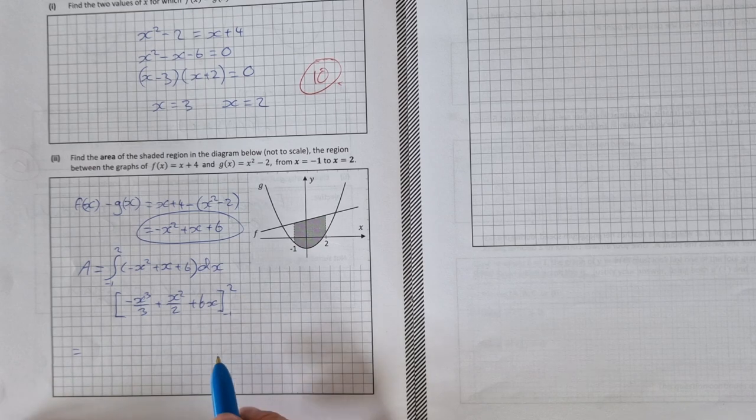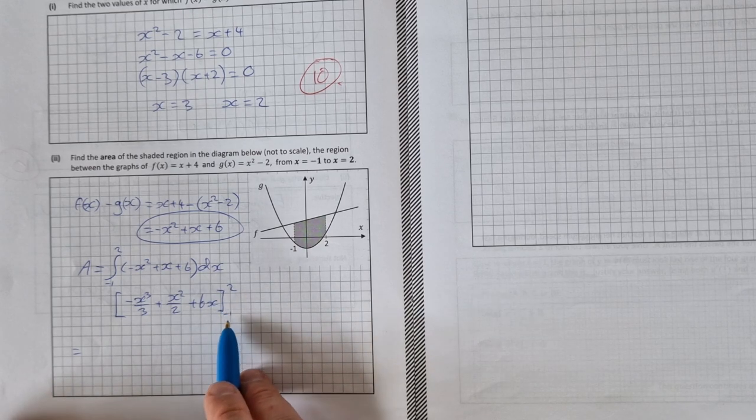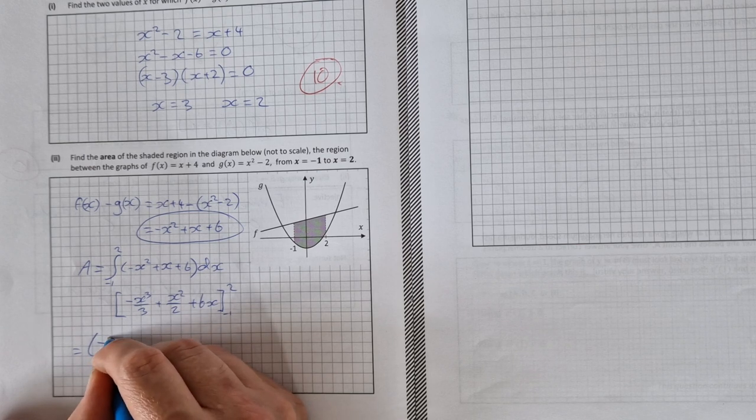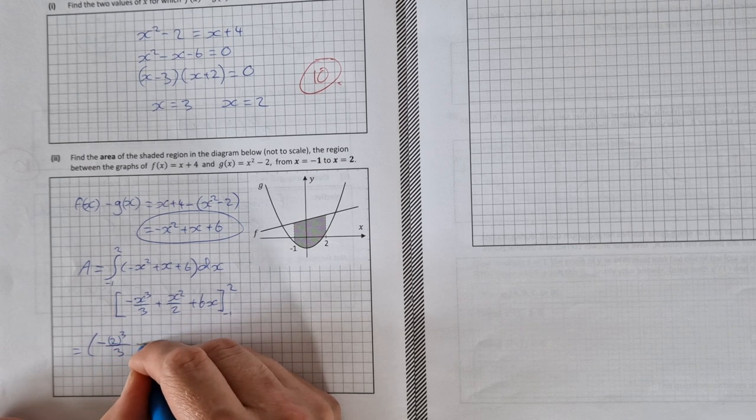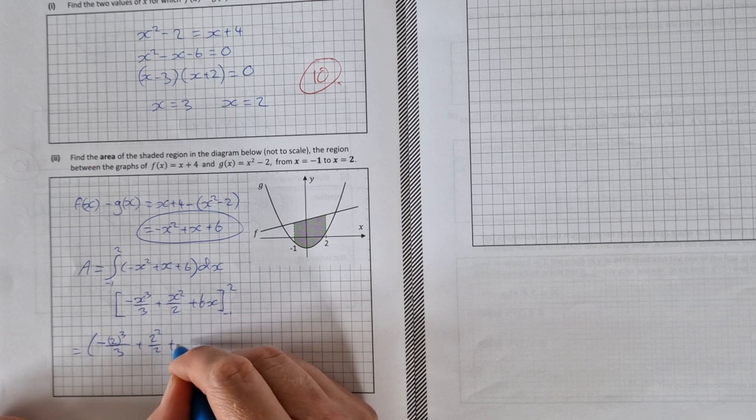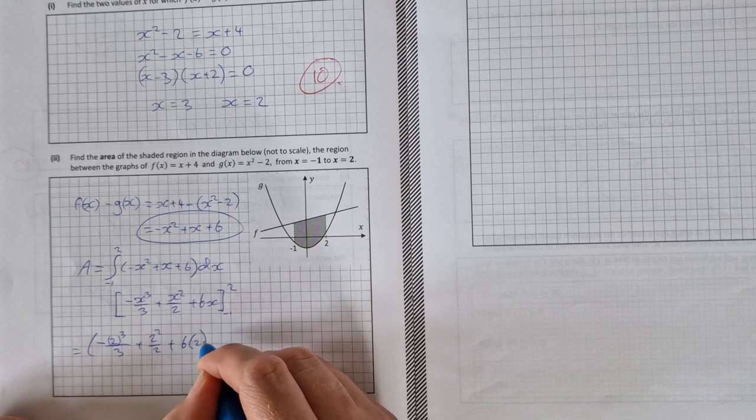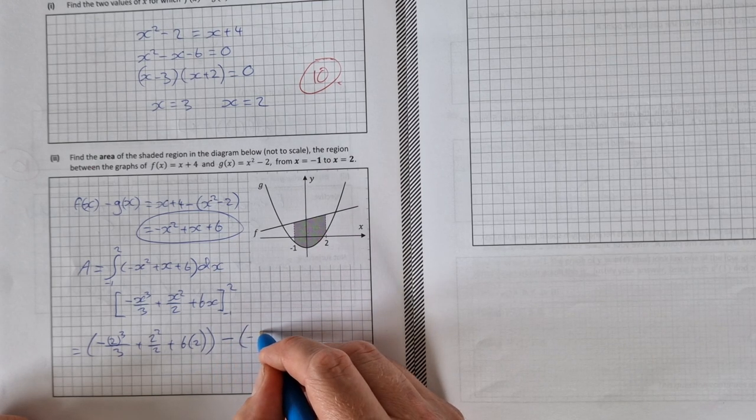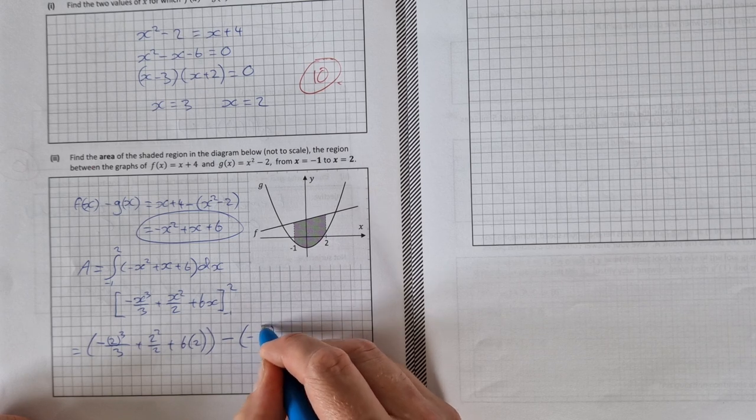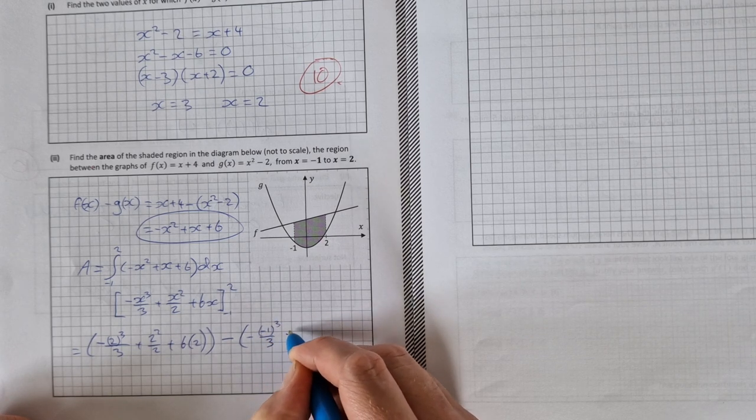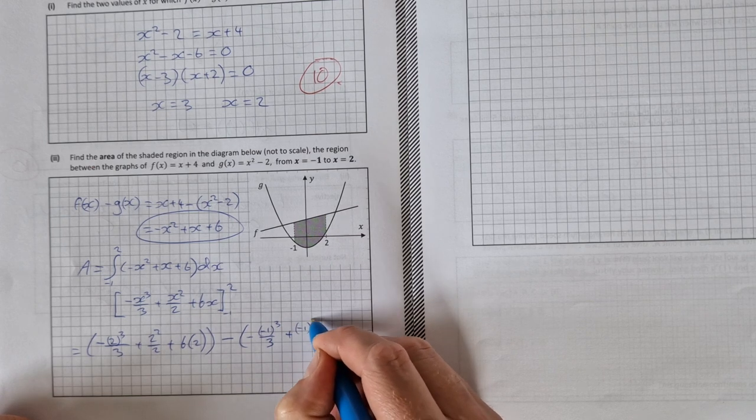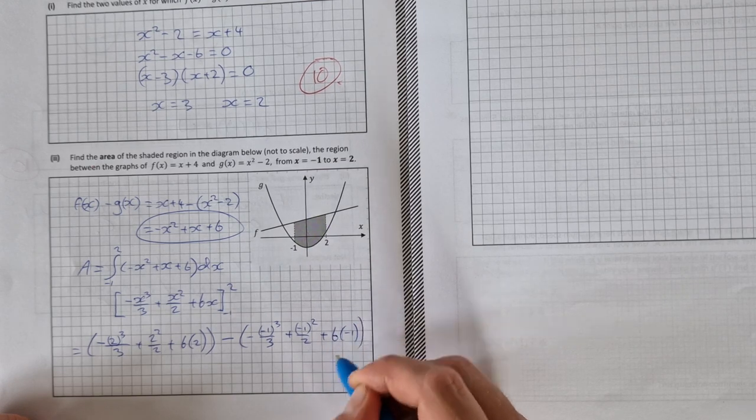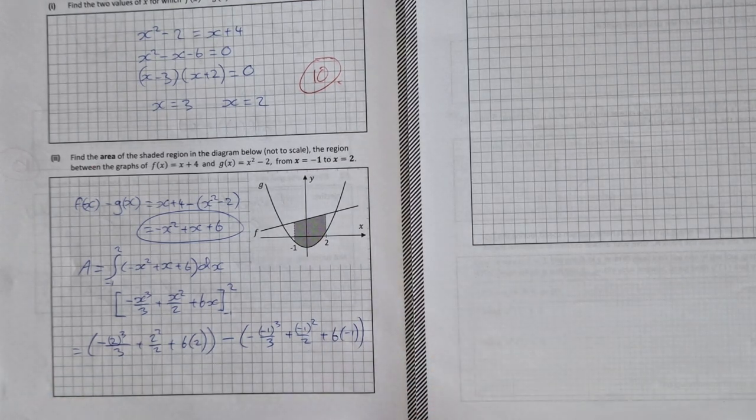First of all we'll put in 2, then we'll put in -1, and we'll get the difference between them. So that's going to be equal to [-2³/3 + 2²/2 + 6(2)] - [-(-1)³/3 + (-1)²/2 + 6(-1)].